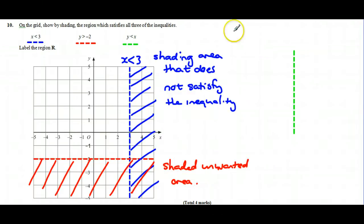And then finally, we've got y is less than x. Now, first of all, we want to identify the line y equals x, which is that diagonal line there. To identify which side of it we want and which side we don't want,